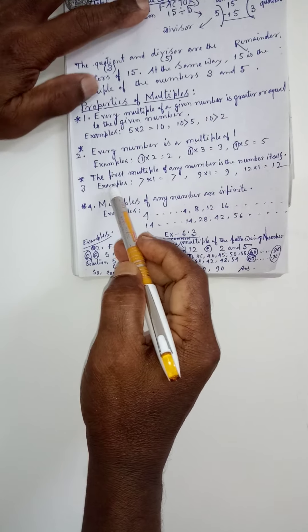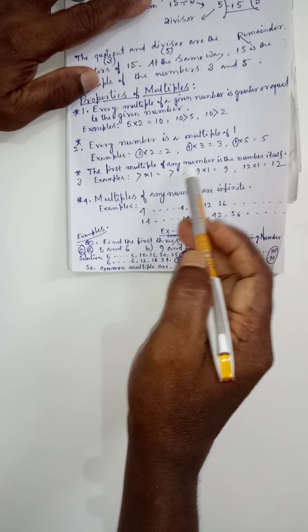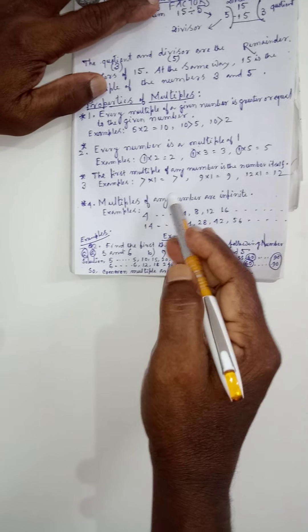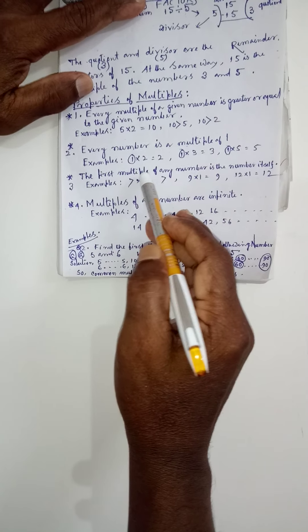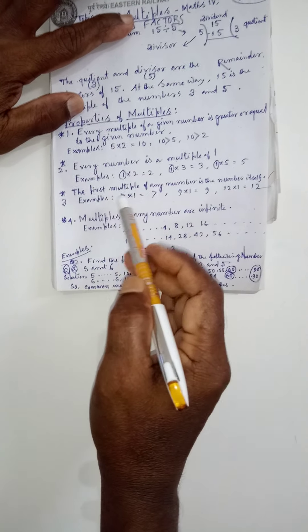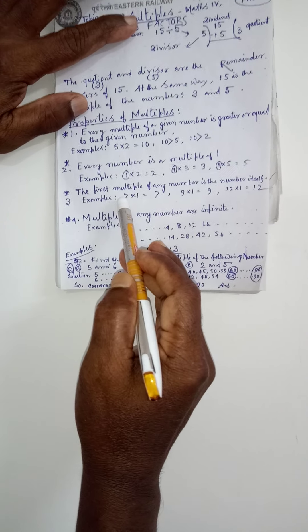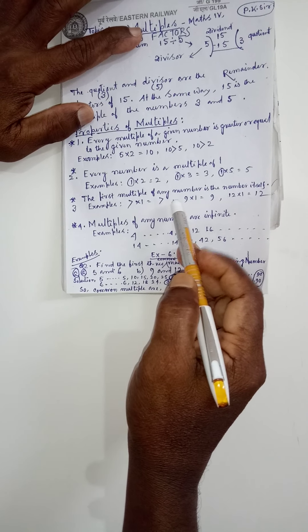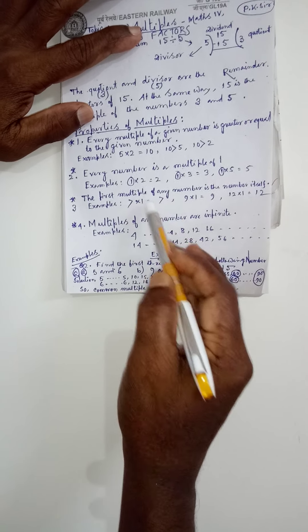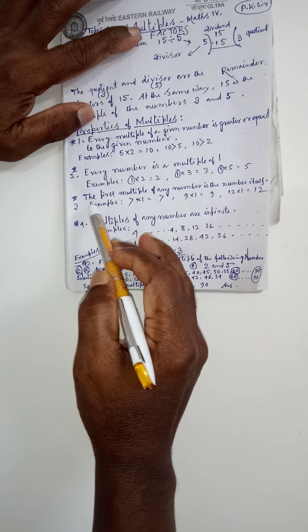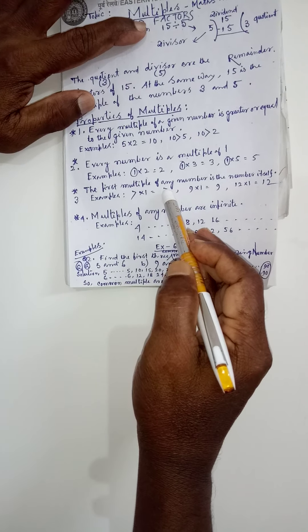Next point. First multiple of any number is the number itself. First number itself. Suppose 7 ka table me 7 one ja 7 atai. 7 to ja 14 atai. So 7 is the number which is the first number of 7 ka multiple, the first number is 7.